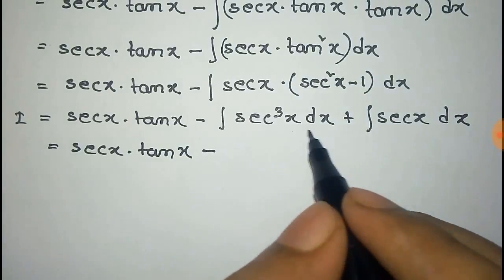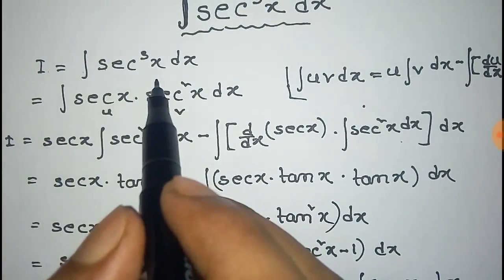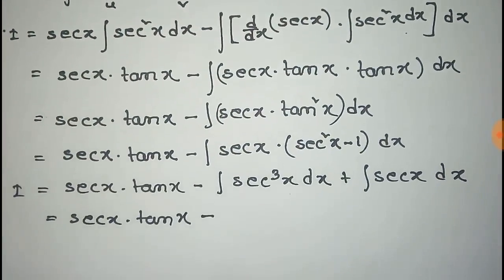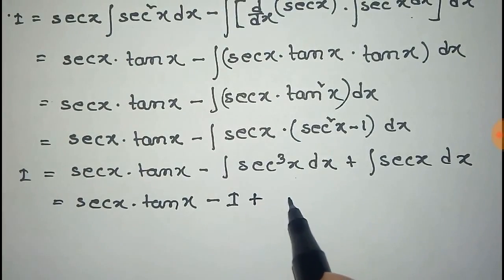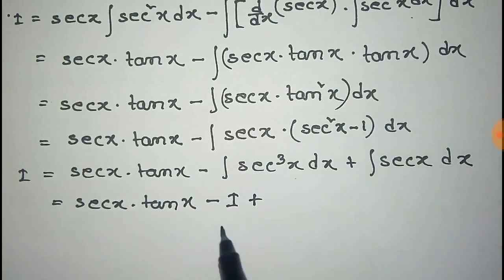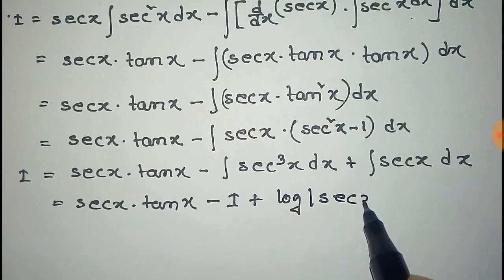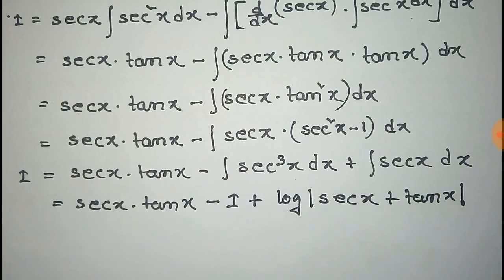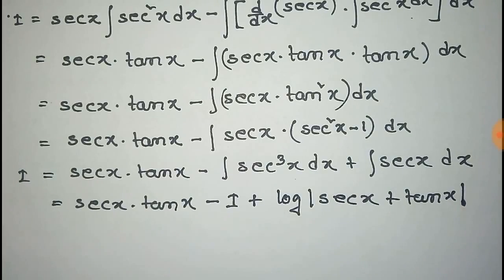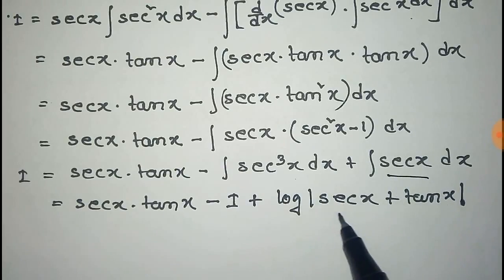Now you can see that integration of sec cube x dx was assumed as i in our initial assumption. So we can write i in the place of integration of sec cube x, plus the remaining integration of sec x dx. The integration of sec x dx is given by log of mod of sec x plus tan x. For this integration you can watch our video on the integration of sec x dx — the link is given in the description of this video.